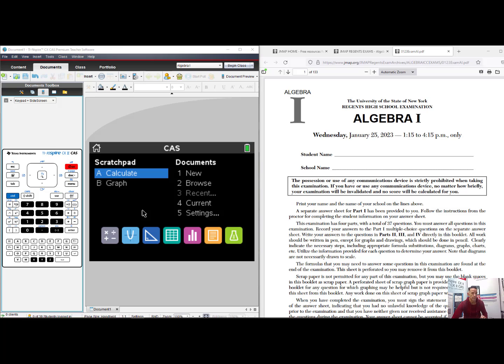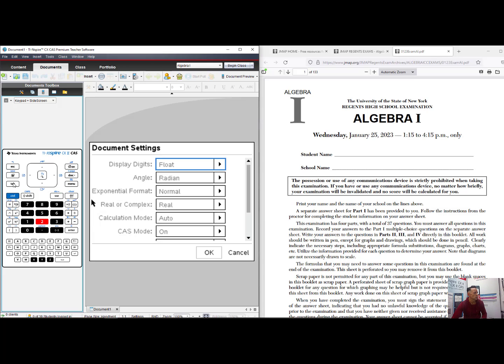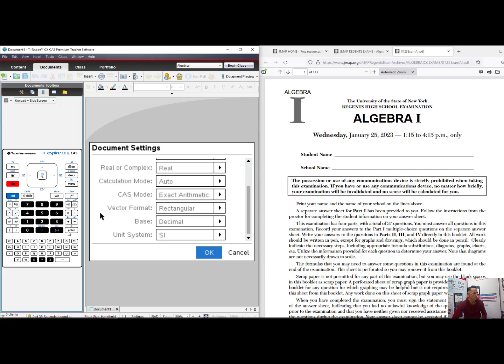I am demonstrating with the TI-Inspire CX2 CAS, which is acceptable to use for the New York State Math Regents exams when you put it into the proper test mode. As I can't put this emulator into test mode, what I will do is put it into the settings that mirror the test mode. So I'll select number 5 from the home screen for settings. I'll choose number 2, document settings, and I will change the CAS mode from on to what is now acceptable, exact arithmetic. I'll tab on down and select OK.